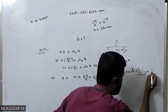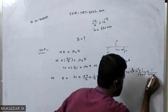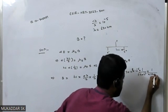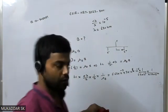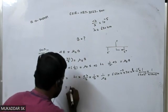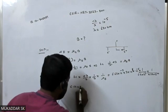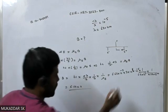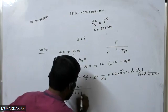And then 1 by lambda, so lambda is 630 nanometer, in meter will be 6.3 into 10 to the power minus 7. And you know the value of Bohr magneton in SI unit, that will be 9.27 into 10 to the power minus 24 joule per tesla.